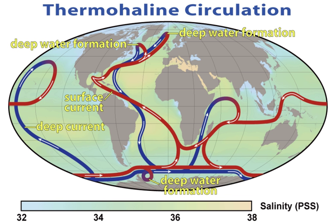Although Juan Ponce de Leon in 1513 first identified the Gulf Stream, and the current was well known to mariners, Benjamin Franklin made the first scientific study of it and gave it its name. Franklin measured water temperatures during several Atlantic crossings and correctly explained the Gulf Stream's cause. Franklin and Timothy Folger printed the first map of the Gulf Stream in 1769–1770.